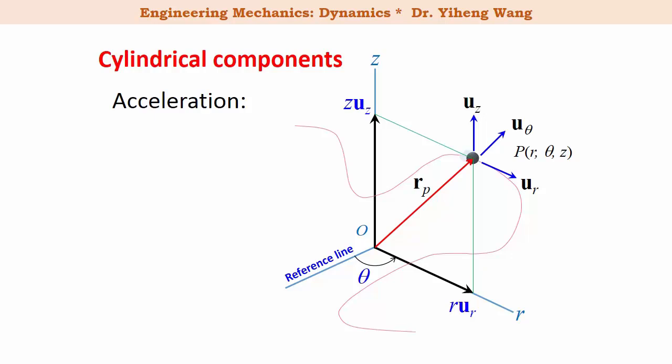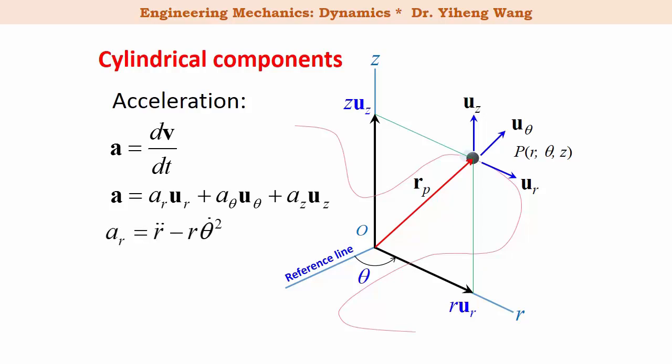For the acceleration represented in the three-dimensional cylindrical coordinate system, it is still defined as the time derivative of the velocity vector, and also has three components along the r, theta, and z directions. a_r equals r̈ minus r·θ̇², where r̈ is the second time derivative of r. a_theta equals r·θ̈ plus 2ṙ·θ̇, where θ̈ is the second time derivative of theta, also known as the angular acceleration. And a_z is the same as in the rectangular coordinate system, which is the second time derivative of z.